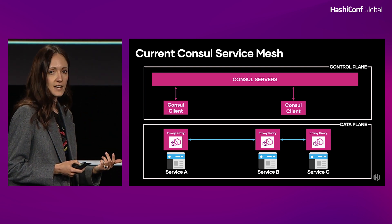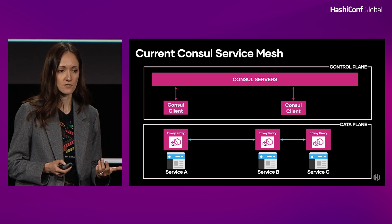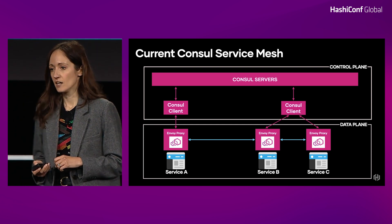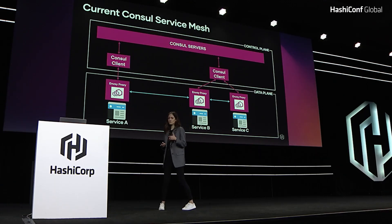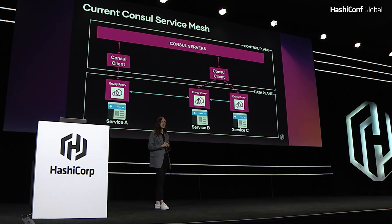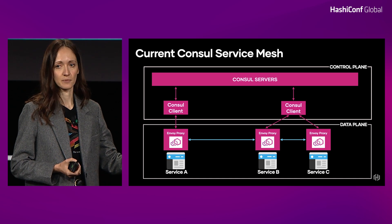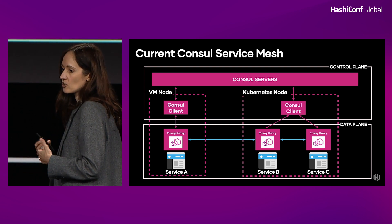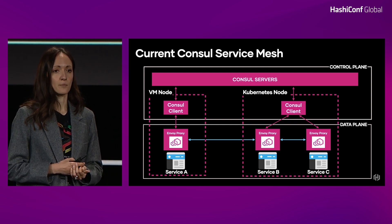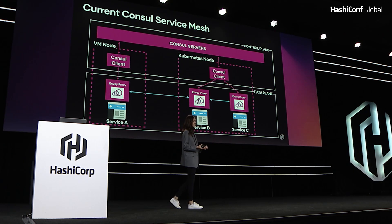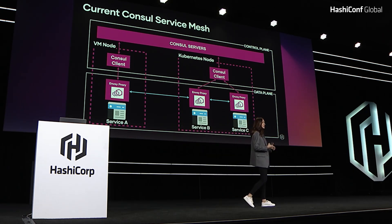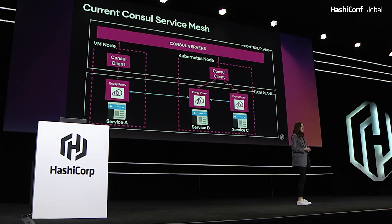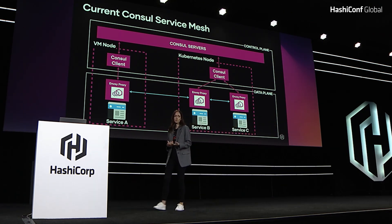Consul clients run alongside your services and represent those services. They control your Envoy proxies — they're the part of the control plane that talks to the proxy and tells it how to route traffic. Notice that the servers never talk to the data plane directly. Importantly, Consul clients need to be running one per VM or one per node, because they need to represent your services. If you're running in Kubernetes, you will have one client running per each Kubernetes node.